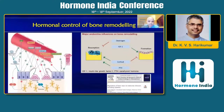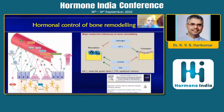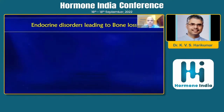Before we look at how to work up these patients, just a slide about what exactly is the hormonal control of bone remodeling. There are many hormones which affect bone functioning — both resorption as well as formation. To make it simple, estrogen inhibits resorption and IGF-1 promotes formation. Cortisol and PTH both lead to increased resorption, and cortisol also inhibits formation. Any alteration in these hormonal parameters will affect bone formation and resorption.